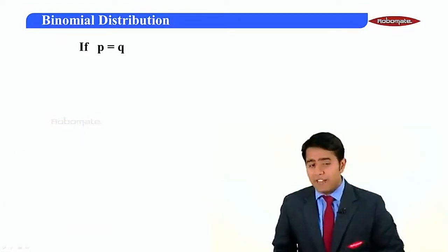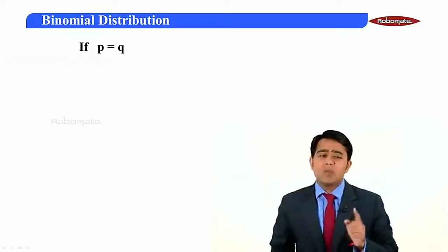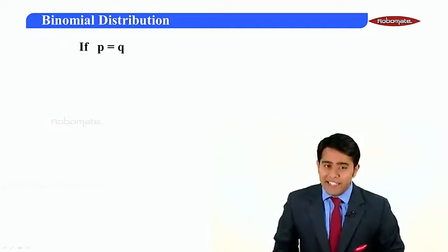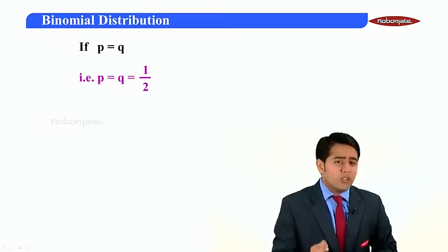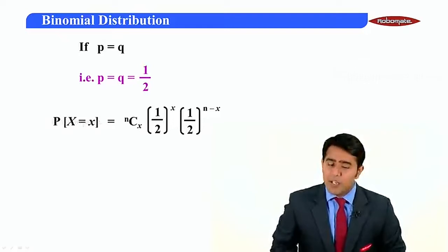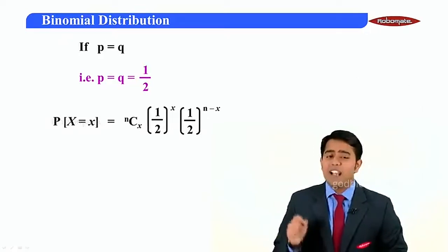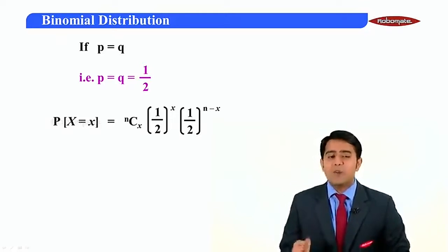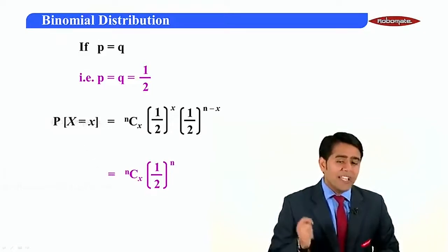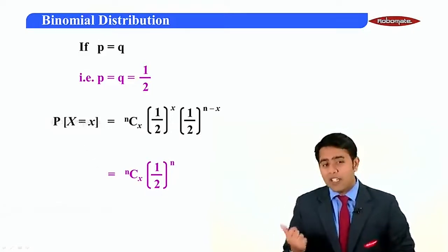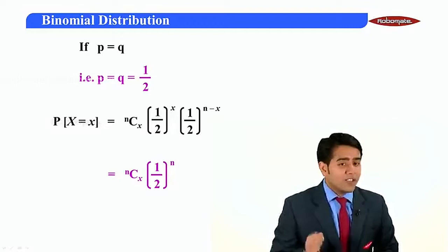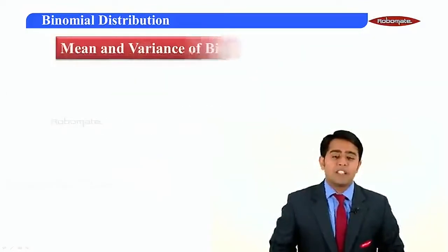Moving to a special case: if p equals q, meaning the probability of success equals the probability of failure, then both p and q equal one-half. Substituting into the formula, P(X = x) becomes nCx times (1/2)^x times (1/2)^(n−x), which simplifies to nCx times (1/2)^n. This simplified formula is applicable only when p equals q.